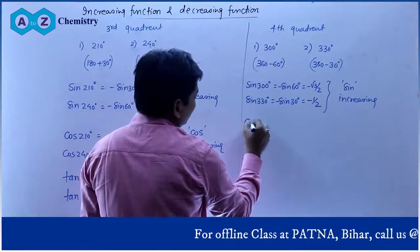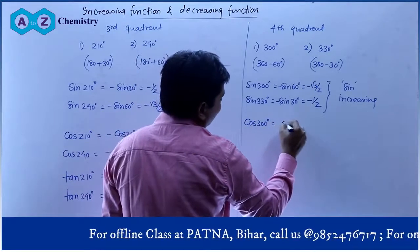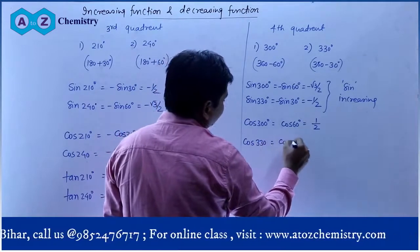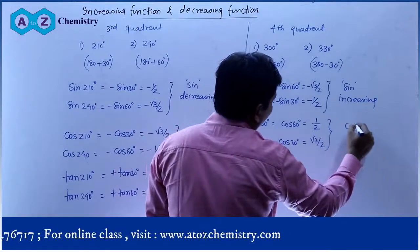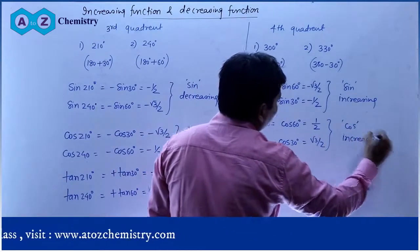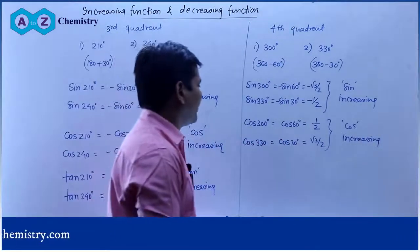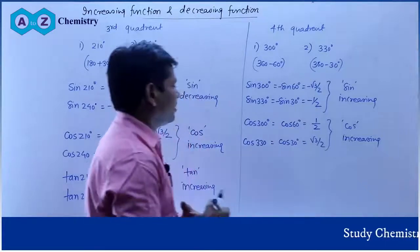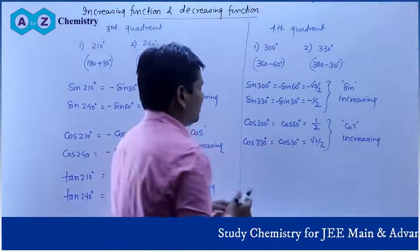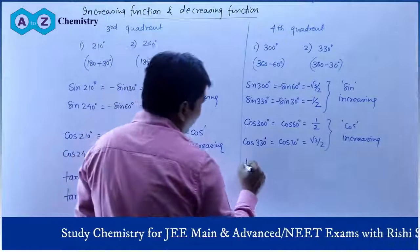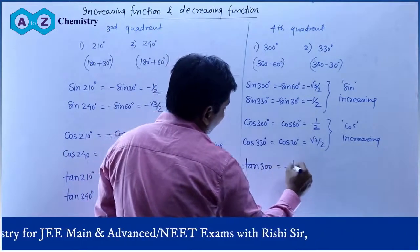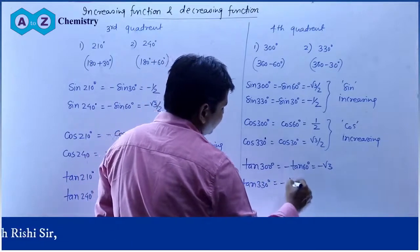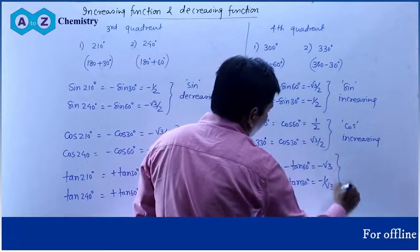Cos 300° = cos(360° - 60°) = +cos 60° = 1/2, aur cos 330° = +cos 30° = √3/2. Values badhti hain, isliye cosine is an increasing function in the fourth quadrant. Tan 300° = -tan 60° = -√3, aur tan 330° = -tan 30° = -1/√3. Angle badhne par values -√3 se -1/√3 badhi. So tan is an increasing function in the fourth quadrant as well.